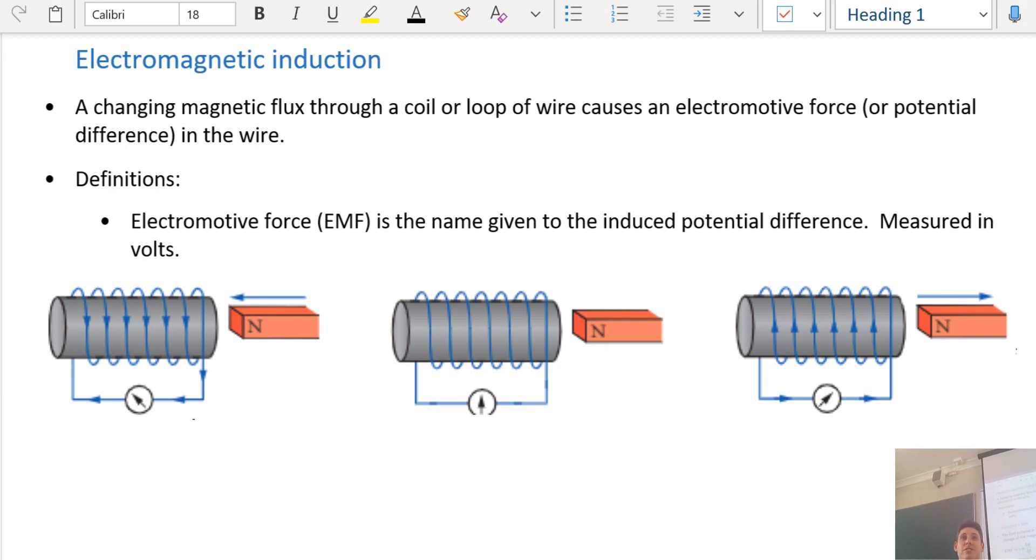A changing magnetic flux through a coil or loop of wires causes an EMF. The EMF is the induced potential difference given by volts, capital V.